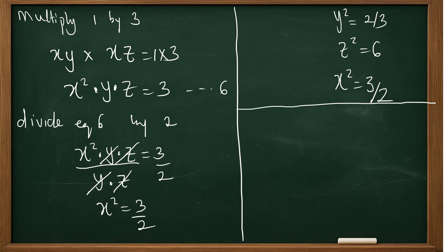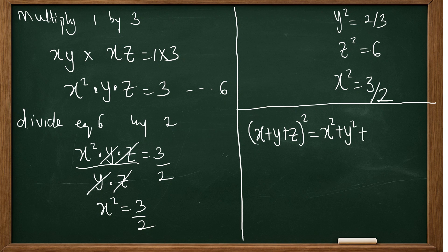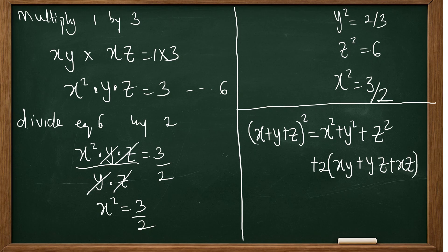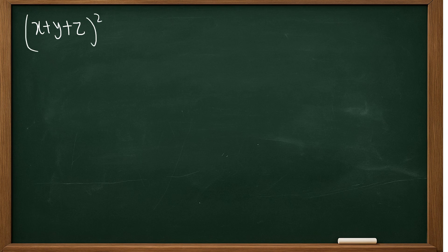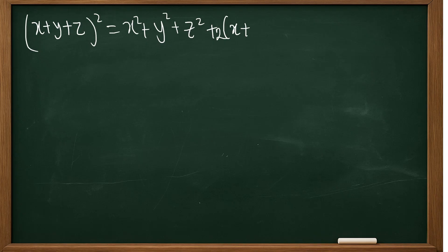Now we can simplify. We are interested in finding x plus y plus z squared. By expansion, this equals x squared plus y squared plus z squared plus 2 times the quantity xy plus yz plus xz.